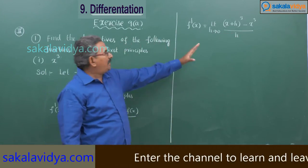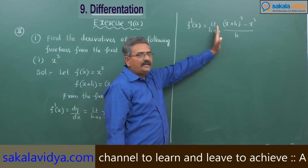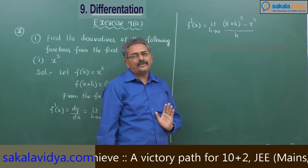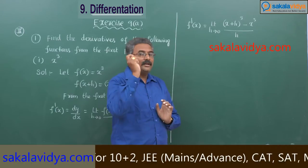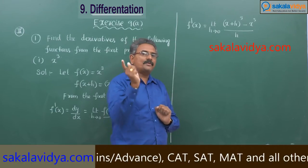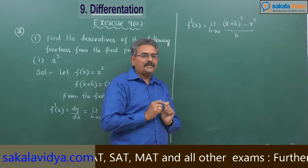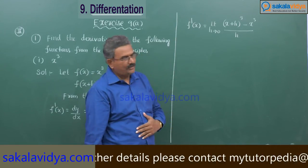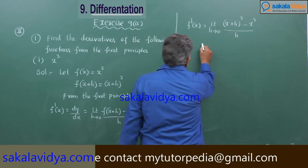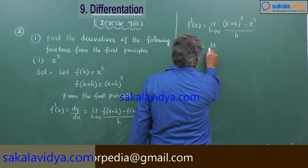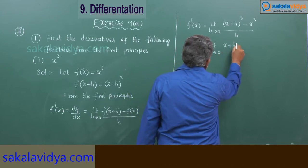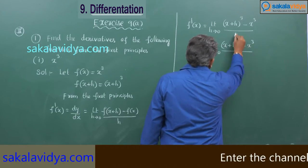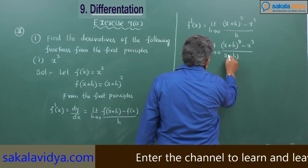Now the limit can be evaluated in two ways. One way is applying the (a+b) whole cube formula. Otherwise, we can apply the standard formula in limits: limit x tends to a of [x to the power n minus a to the power n] by [x minus a], which equals n into a to the power n minus 1. So this can be written as limit h tends to 0 of [(x+h) whole cube minus x cube] by [(x+h) minus x].